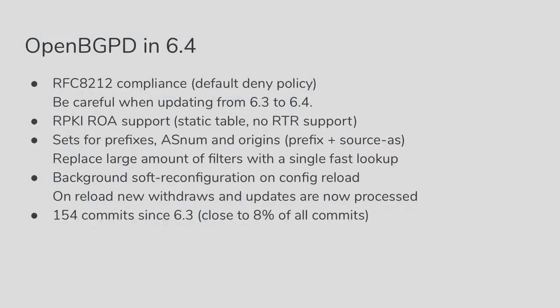I started working on this in June, and we released OpenBSD 6.4 just at the start of this month. Let me have a look at what actually happened in this short time. I'll highlight a few key points. First of all, we changed the filtering policy in OpenBGPD. It's now a default-deny policy, so you need to explicitly allow a prefix in and out of the system to make it go through. This is a big change, and people who are currently running OpenBGPD should be careful when they update, because it's quite easy to trip on that.